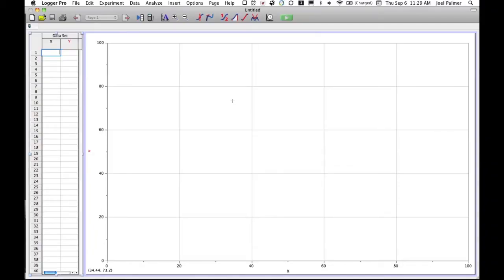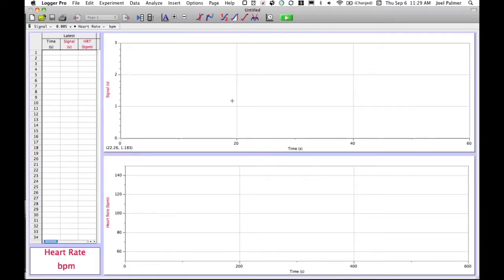I'm going to hook it up and see if we can get it to work. The software has detected the new probe and it has the signal and the heart rate. The signal is the actual pulse, so when we start collecting data you'll notice that on the signal you'll get spikes. If you're not getting spikes, you're not picking up data. The heart rate at the bottom is actually measuring the heart rate.